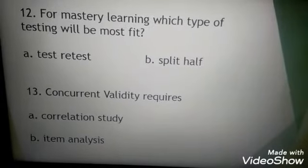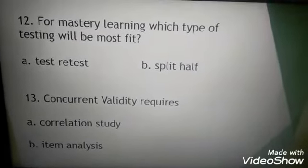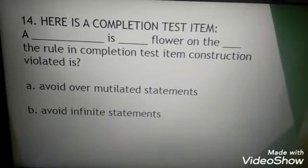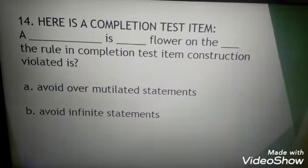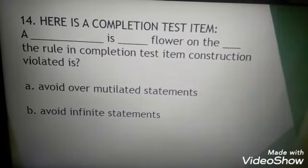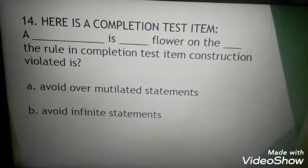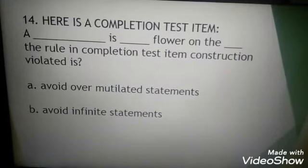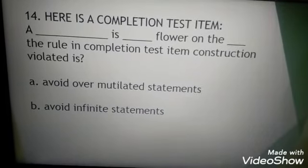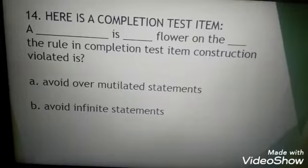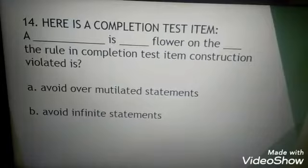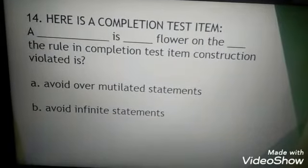Number fourteen: here is a completion test item. A blank is blank flower on the blank. The question is, the rule in completion test item construction violated is, is it A, avoid over-mutilated statements, or B, avoid infinite statements? The answer is letter A.